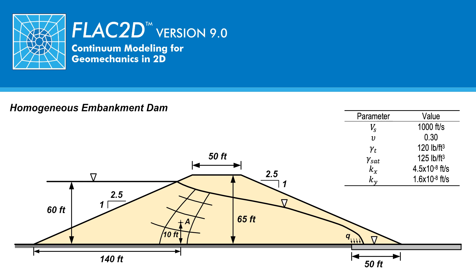In part one of this tutorial, the total stresses due to gravity were calculated. In this tutorial, part two, the pore water pressures in the embankment, and in particular point A, will be calculated as well as the water flow entering the drain.